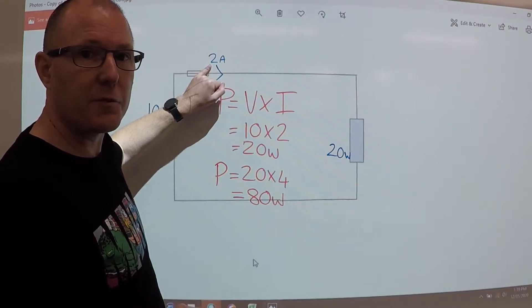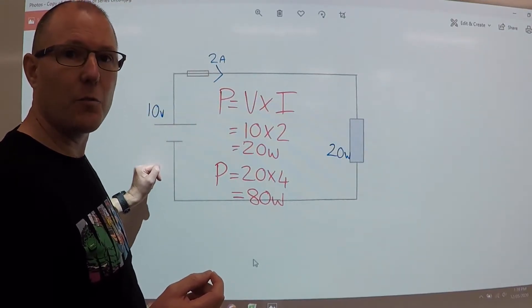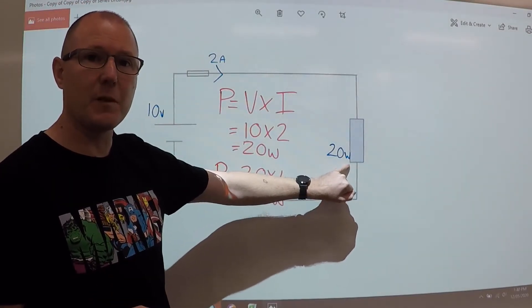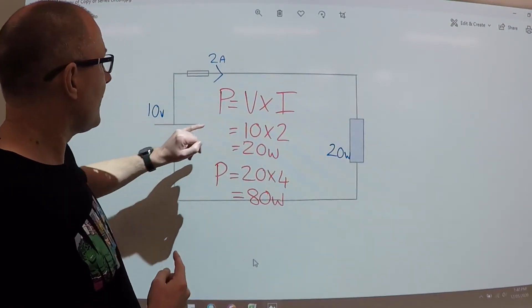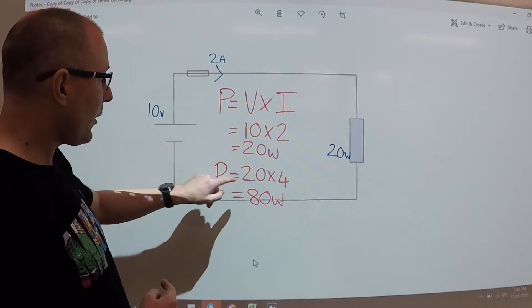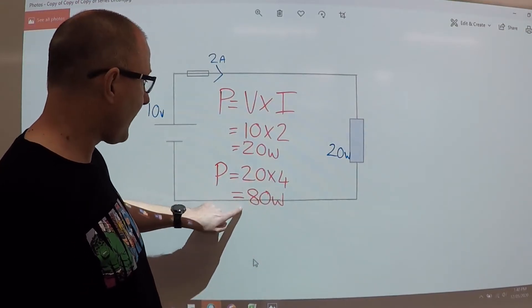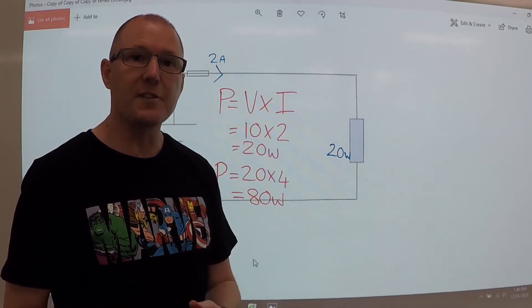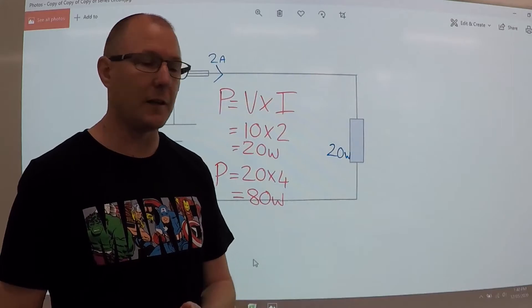Now let's see what happens when we double the current. Don't forget, to double the current, the voltage has to double. If the resistor stays the same, if the current doubles, so will the voltage. So then we've got power equals 20 volts multiplied by the 4 amps, and that gives us 80 watts. So the power has quadrupled or times by 4 compared to earlier.